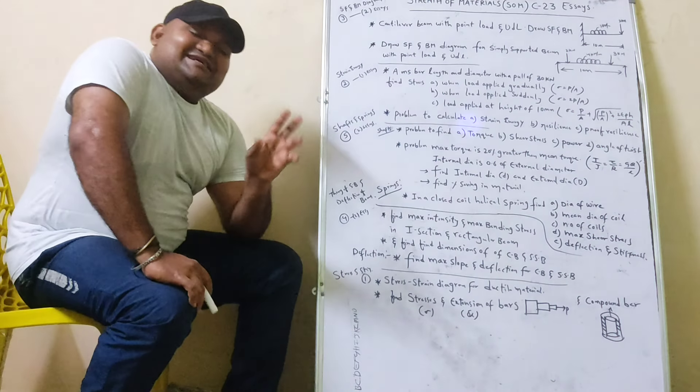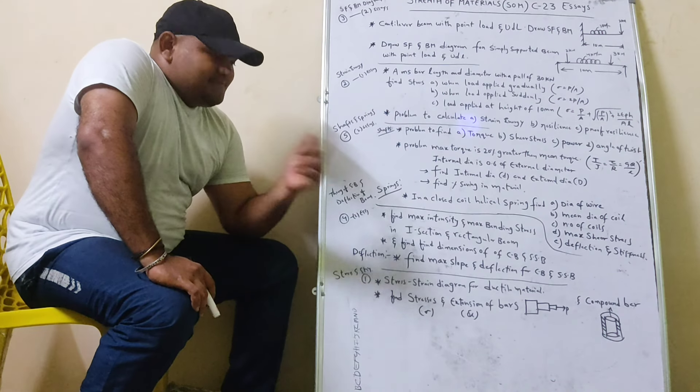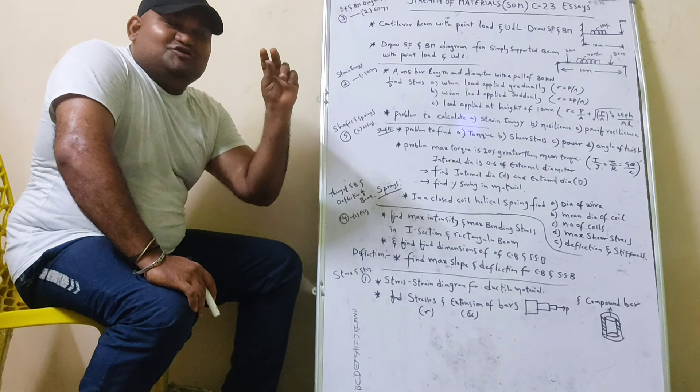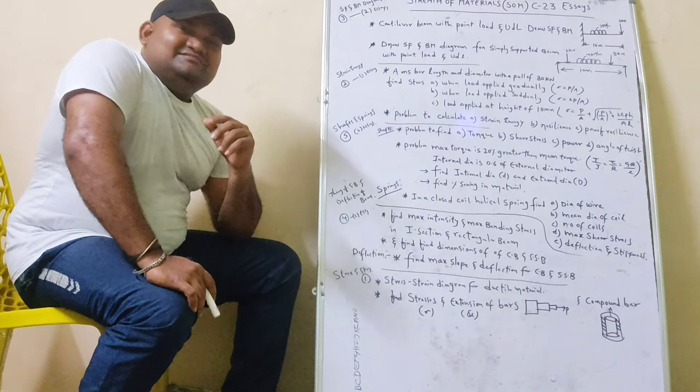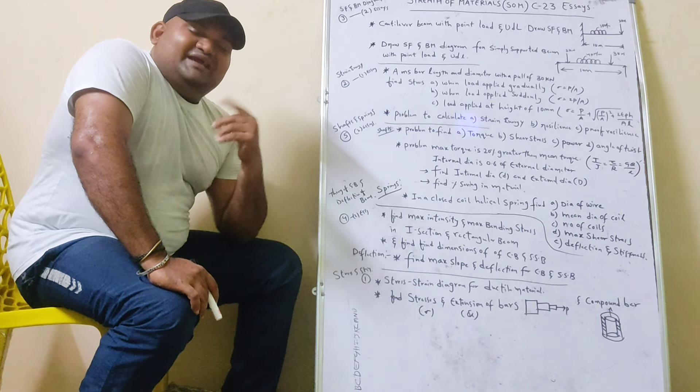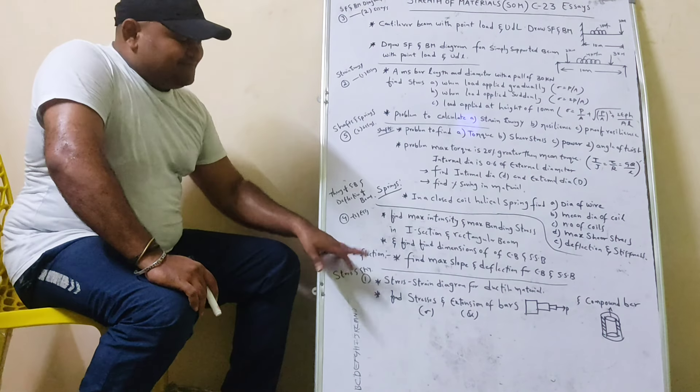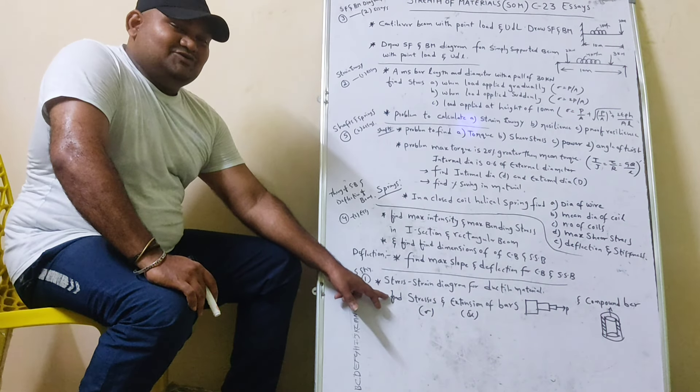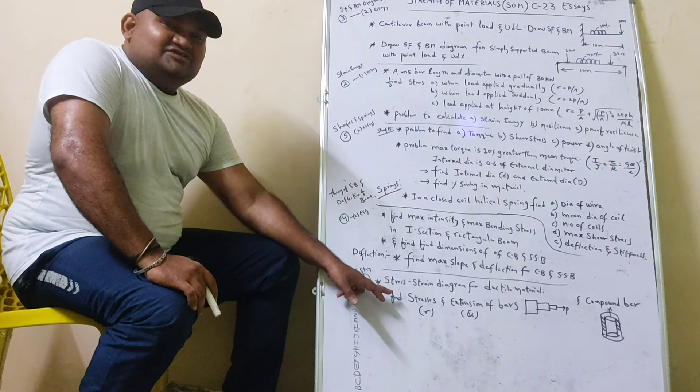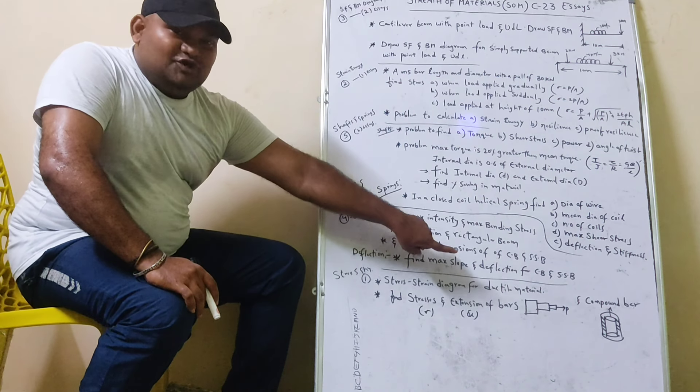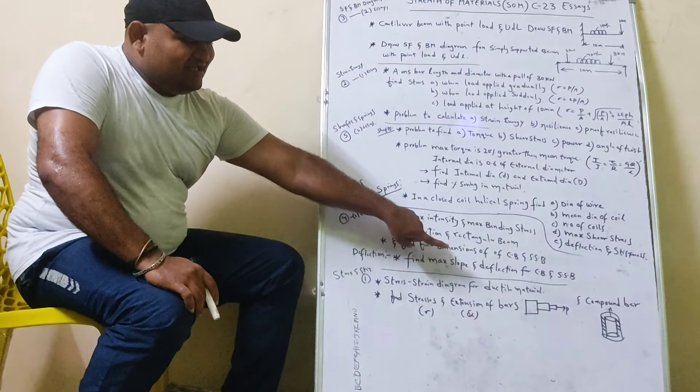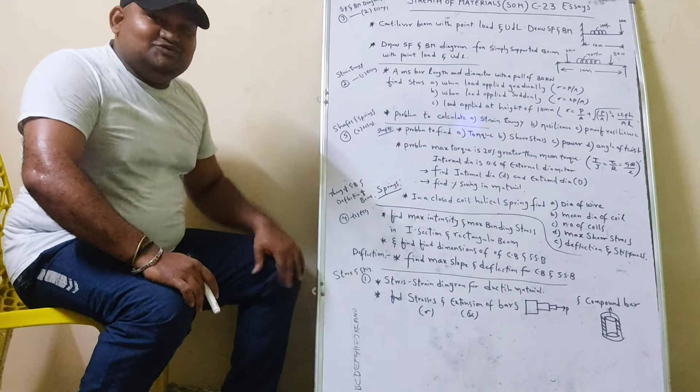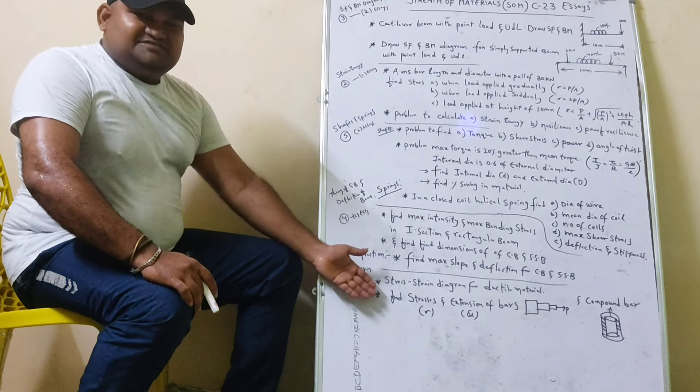First, we have to do the stress-strain diagram for the ductile material. For mild steel, we have to do the stress-strain diagram. Proportional limit, elastic limit, yield point, ultimate point, breaking point. We have to explain it. Find stresses and extension of bar. If sigma as well as delta L, delta L is equal to PL by A. If you have to do the step bar, extension of bar. If you have to do the compound bar. If you have to do the thermal stress.